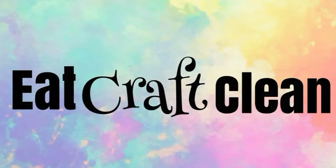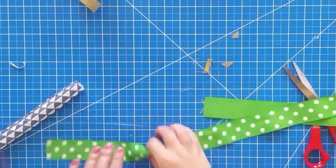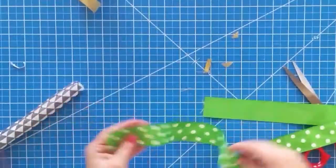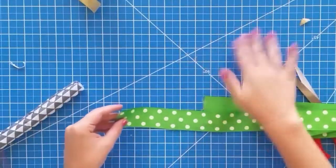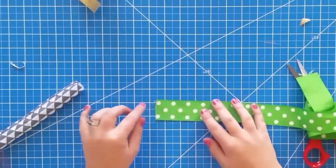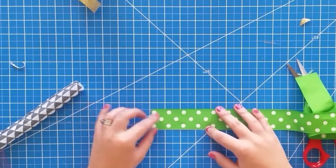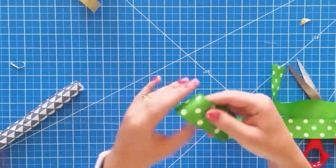Okay, so to start you're going to need some ribbon. This ribbon is an inch and a half wide. I like this size the best. And so what you're going to want to do is hold the ribbon so the polka dots are facing away from you.